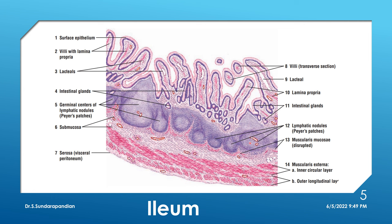In the slide of duodenum and jejunum there may be a chance of lymphatic nodules in the lamina propria, but usually there are no nodules. In ileum the striking identification point is the presence of numerous lymphatic nodules called Peyer's patches — which are aggregations of lymphatic nodules. The number of villi in ileum will be less and smaller in size compared to jejunum and duodenum.